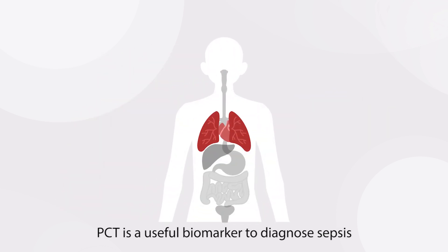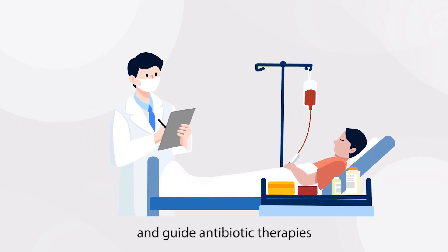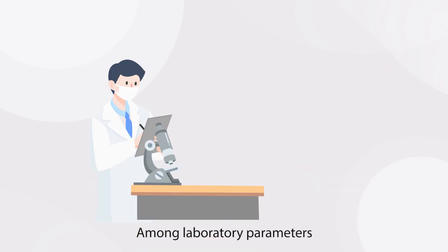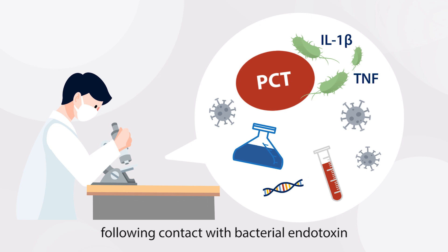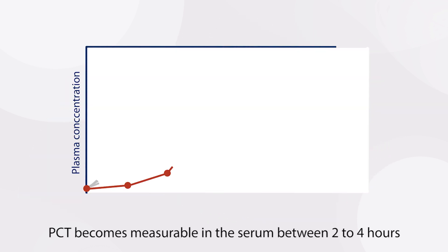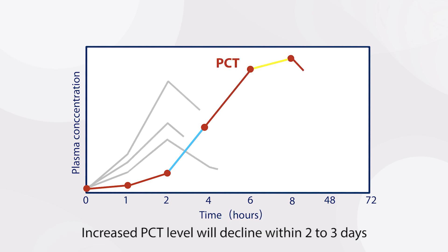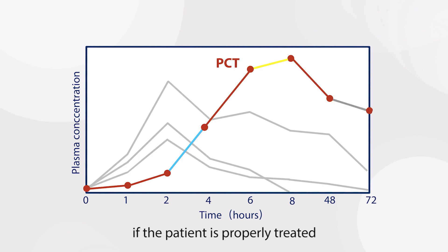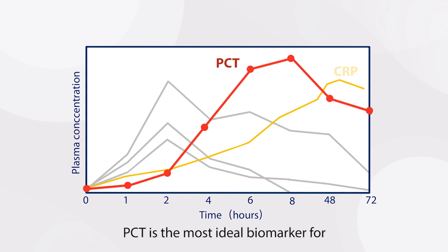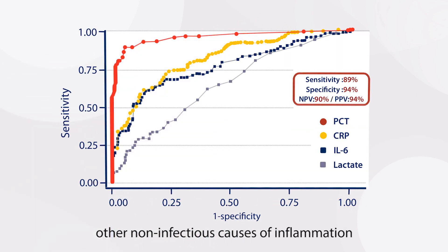PCT is a useful biomarker to diagnose sepsis, prognosticate infection, and guide antibiotic therapies. Among laboratory parameters, following contact with bacterial endotoxin, PCT becomes measurable in the serum between two to four hours and peaks around six to eight hours. Increased PCT levels will decline within two to three days if the patient is properly treated.